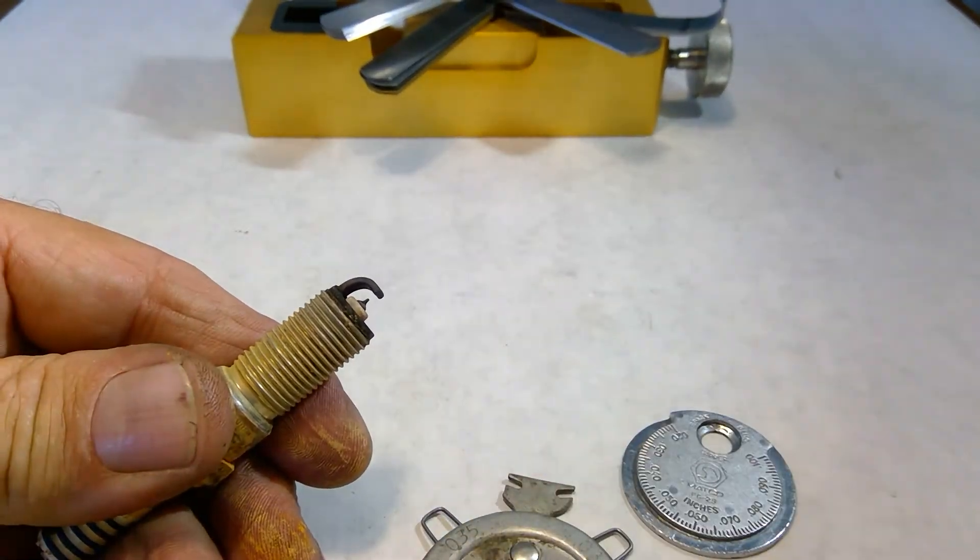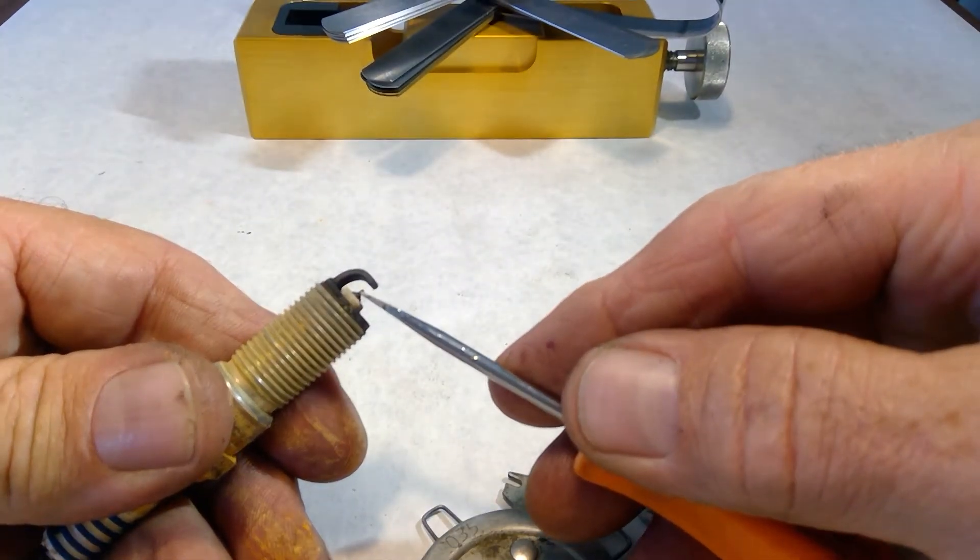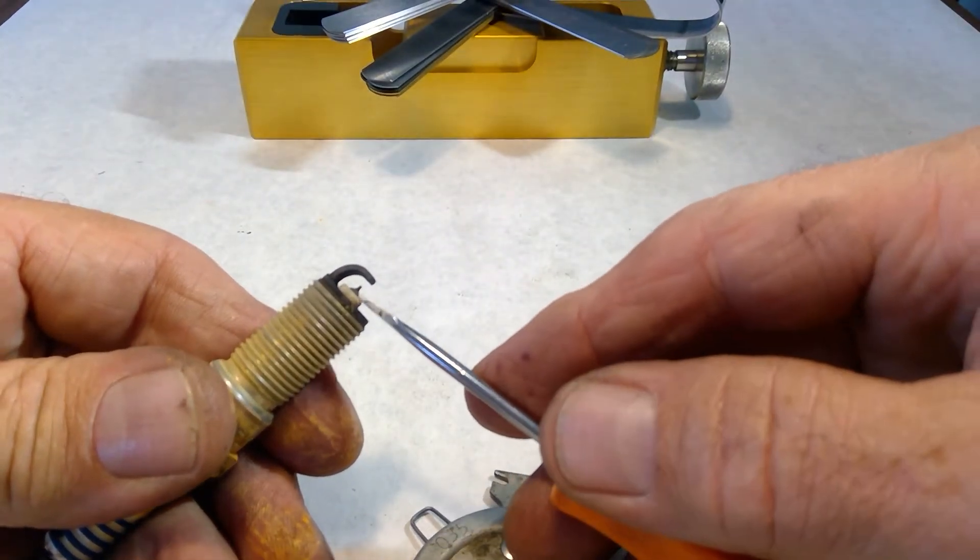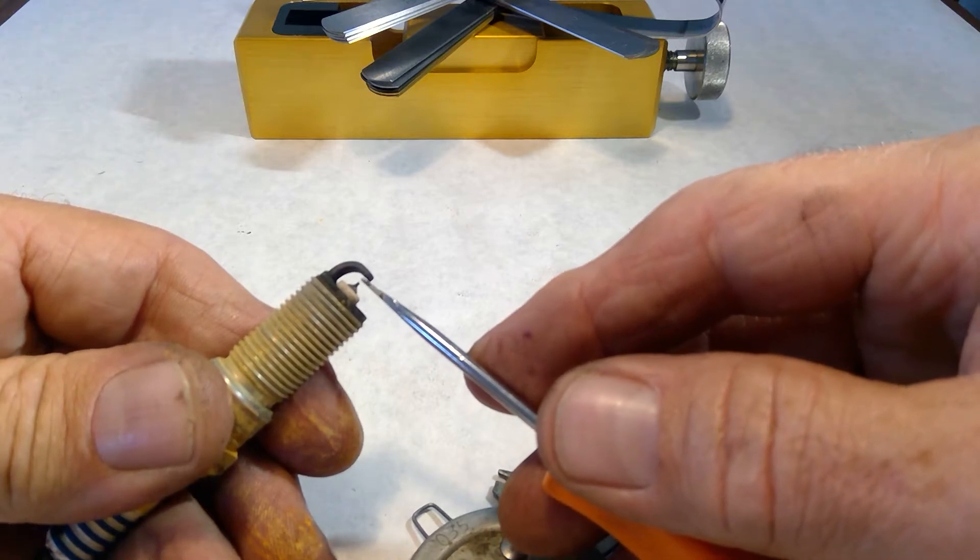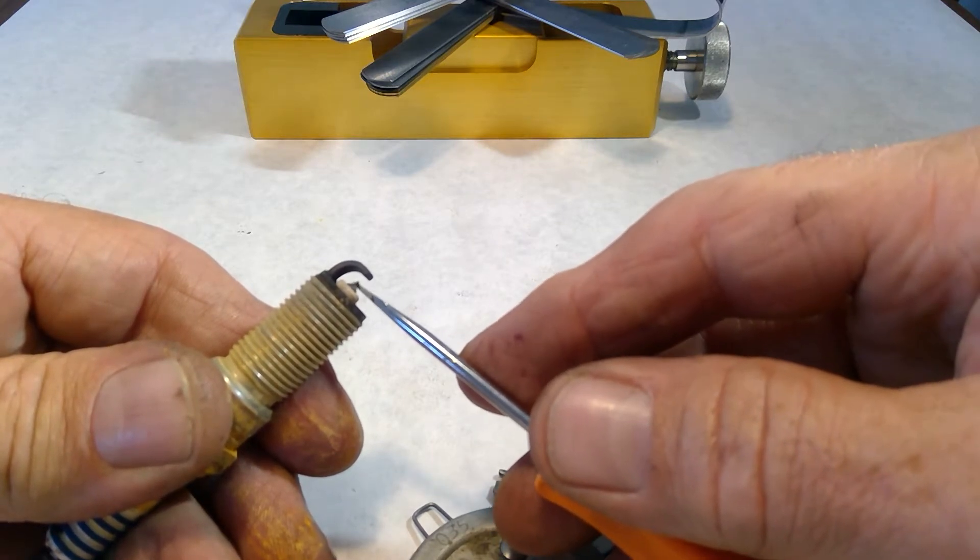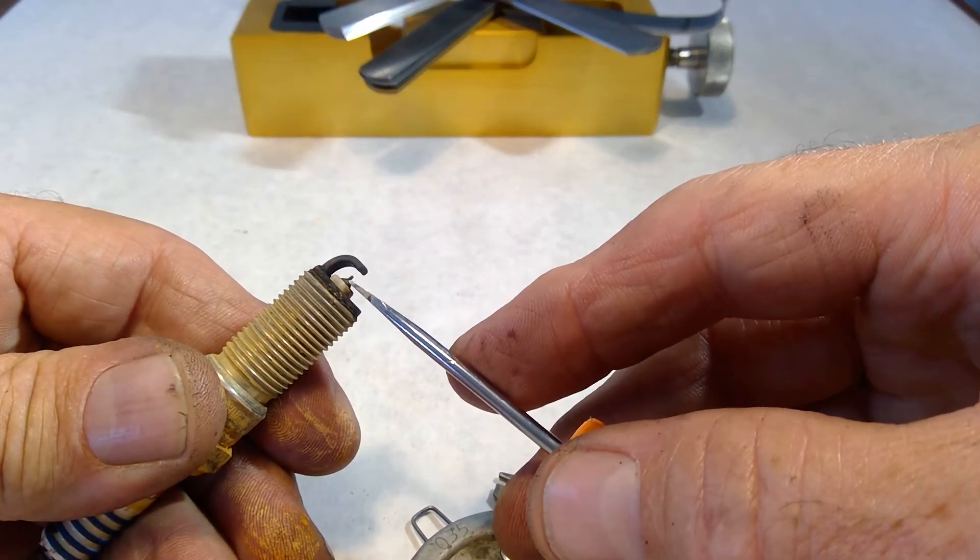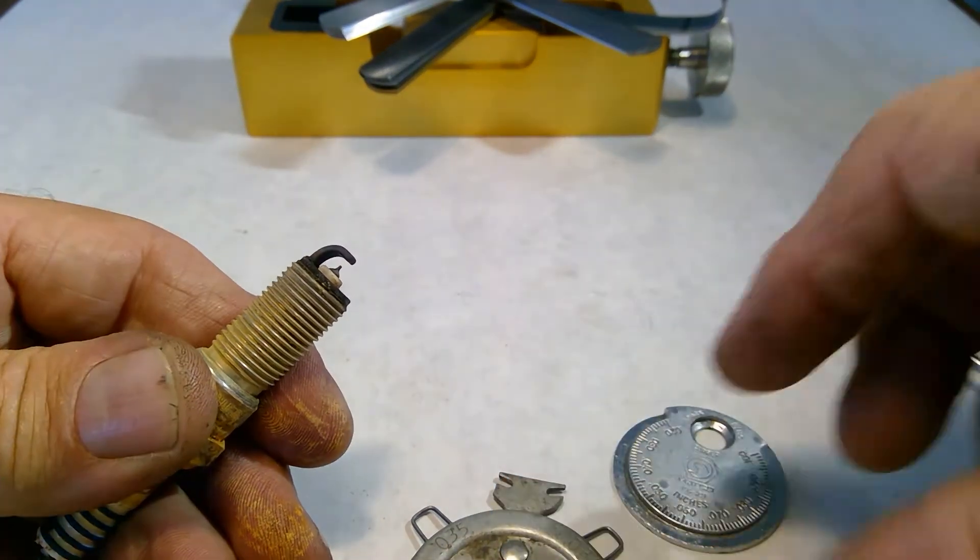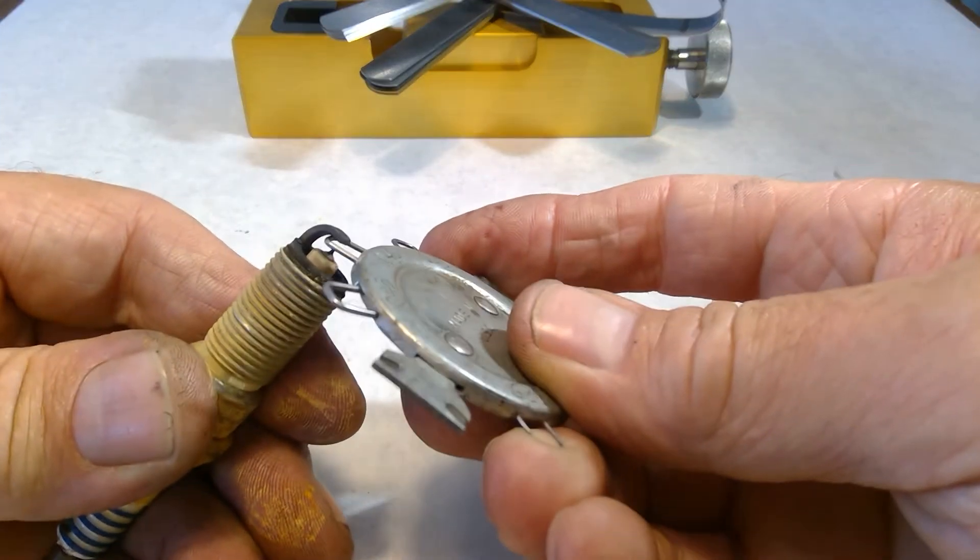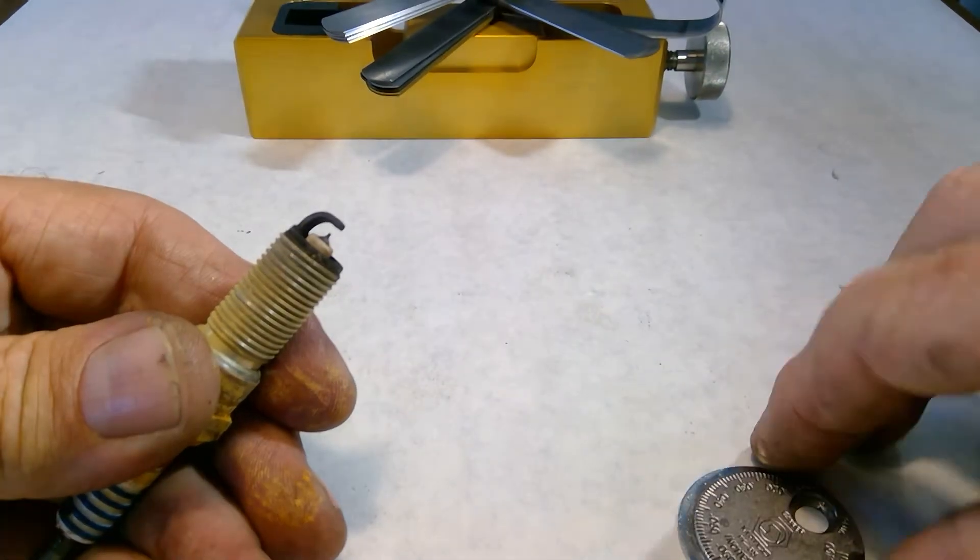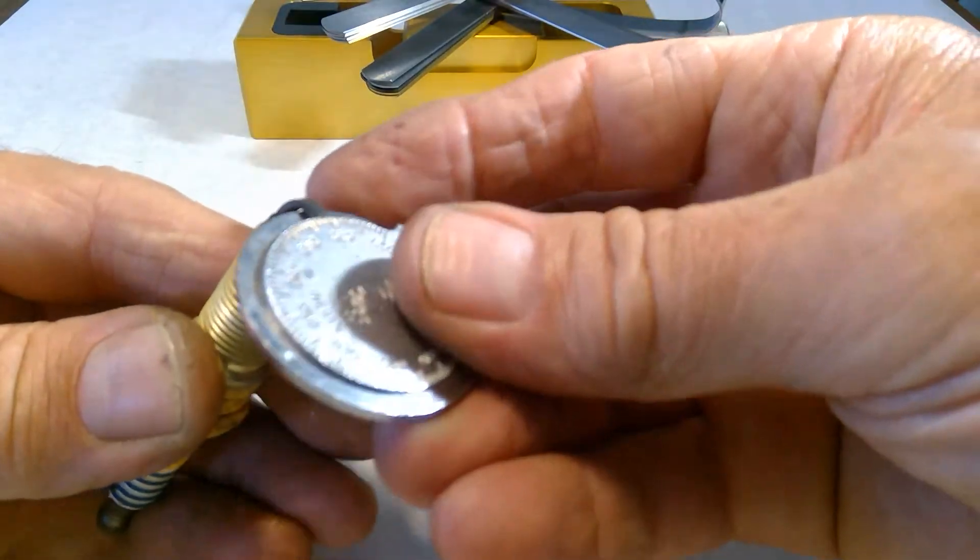This is a platinum spark plug, and you can see how small that center electrode is. Platinum and iridium plugs have a very small center electrode, and the electrode itself is actually really brittle. It's very easy to break these. So, trying to get a measurement with the wire, you can damage the spark plug.